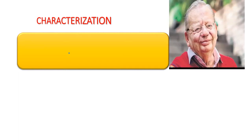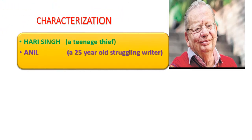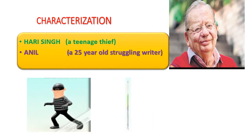Ruskin Bond has basically made use of very few characters in his stories. This small story, The Thief's Story, also has two main protagonists: Hari Singh, a teenage thief, and Anil, a 25-year-old struggling writer. He has portrayed these two characters in a very lively way.